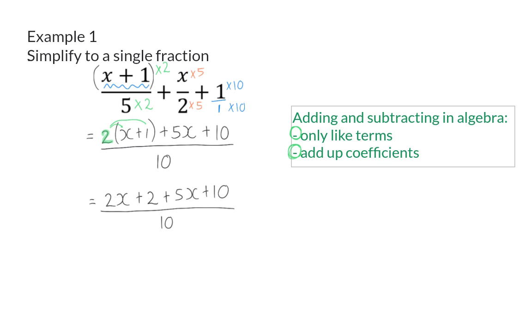So, back to our example, we have some like terms. We have 2x plus 5x, and this will give us 7x, and then we also have the two constants of 2 plus 10, which will give us plus 12. This is then our final answer, because the two terms in the numerator are not like terms.